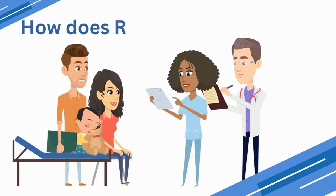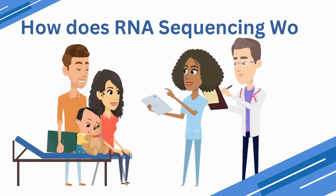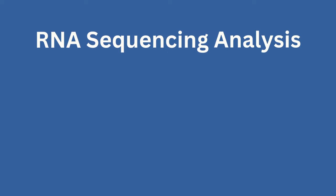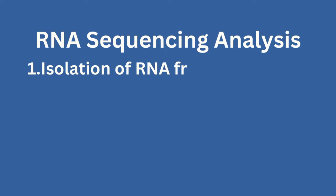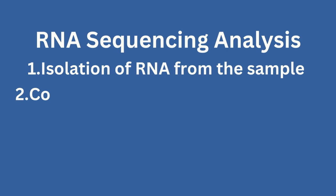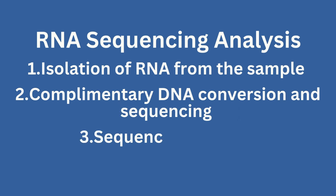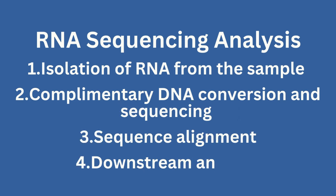Let's dive a bit deeper into how RNA sequencing works. RNA sequencing has four main steps: one, isolation of RNA from the sample — this could be blood or a tissue sample; two, complementary DNA conversion and sequencing; three, sequence alignment; and four, downstream analysis of the results.